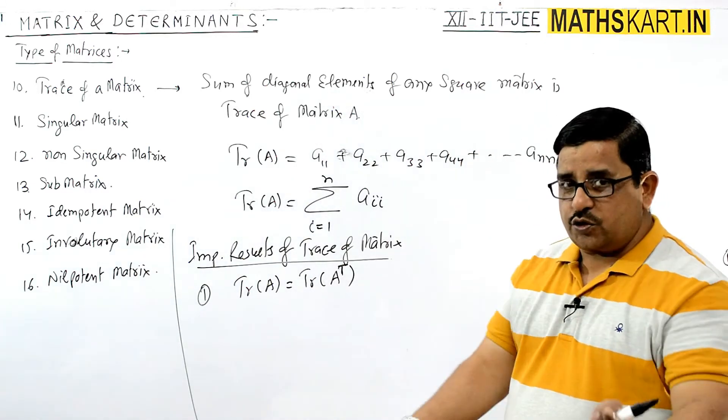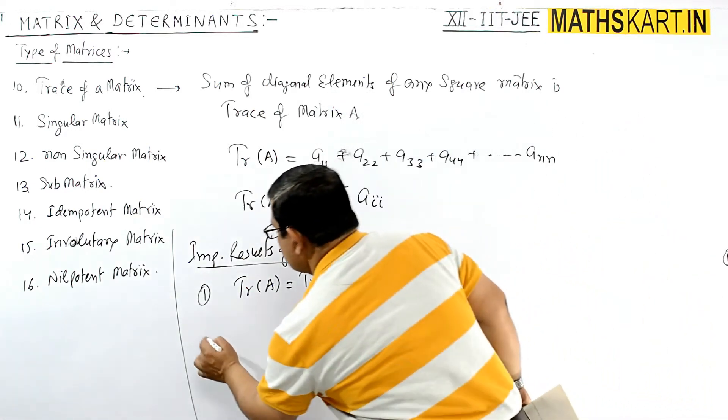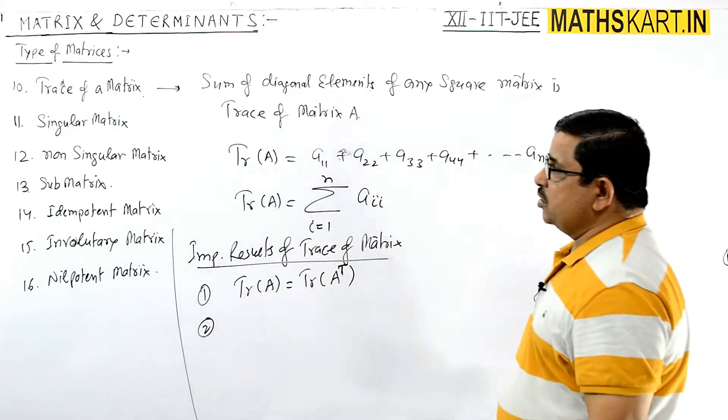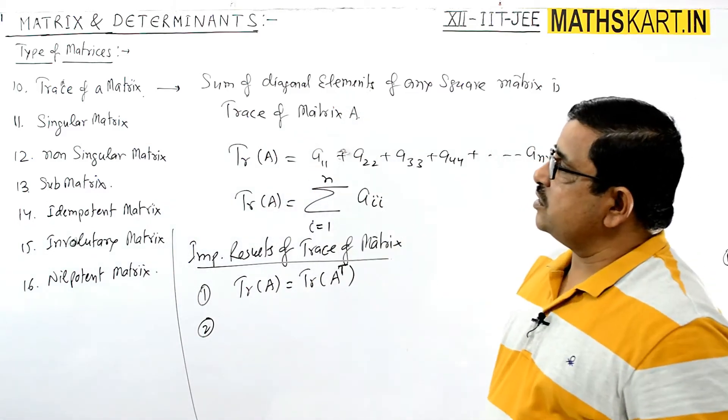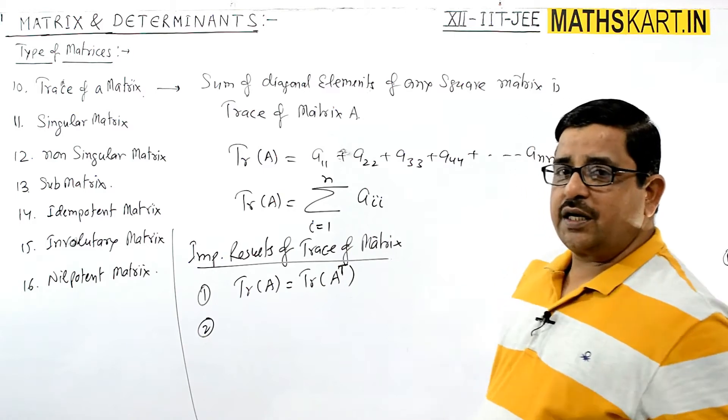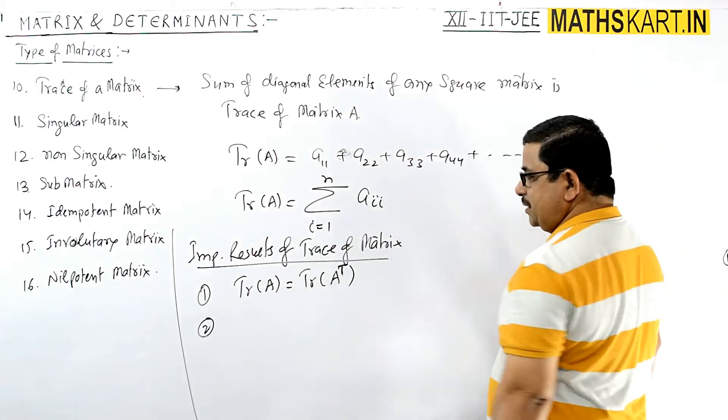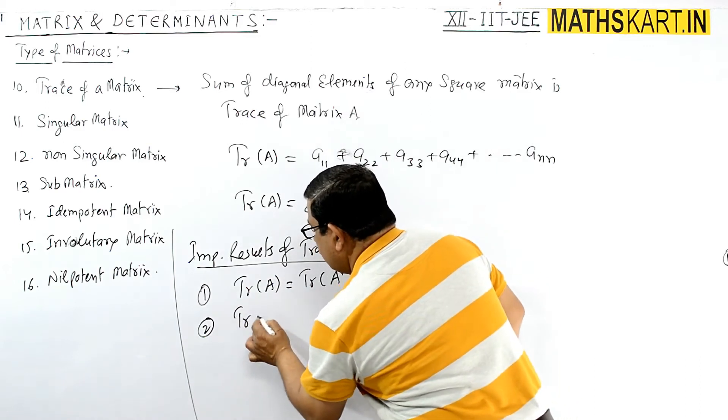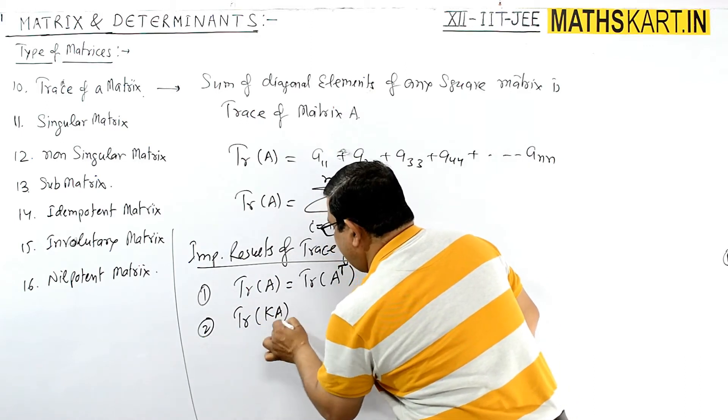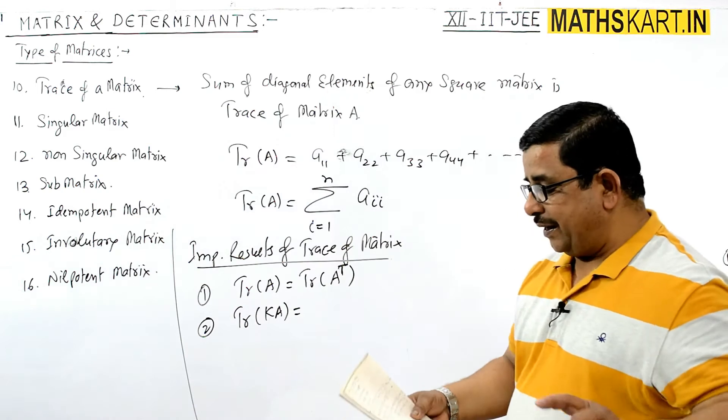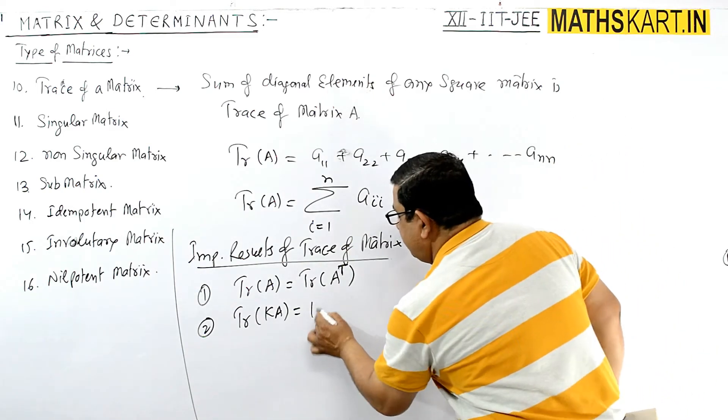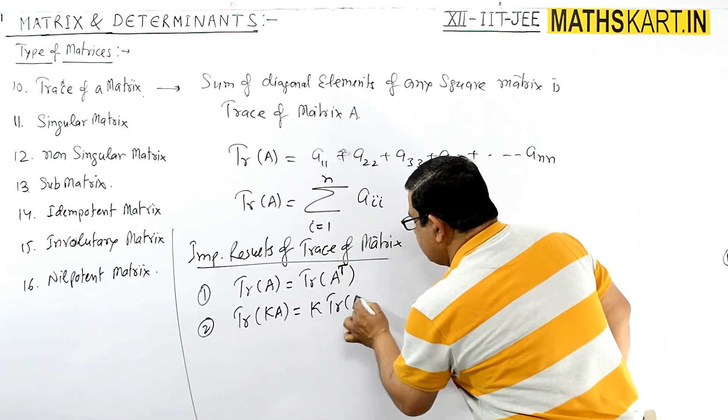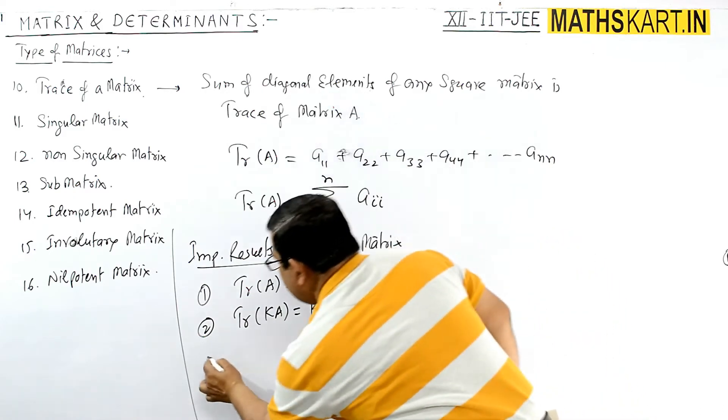A transpose hasn't been discussed yet, so just remember this property for now. Second point: trace of k times any matrix - k can come outside, and you can write the trace of any matrix A.